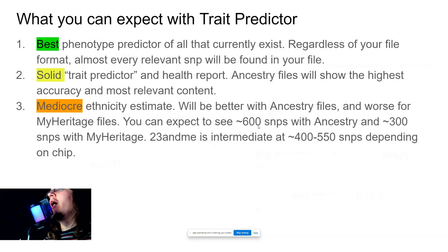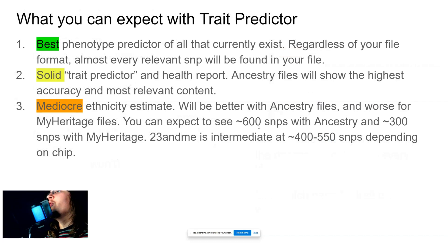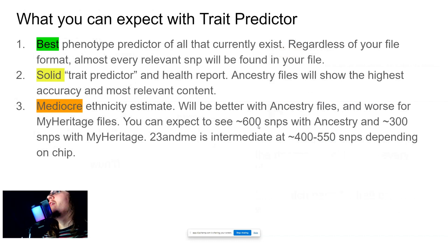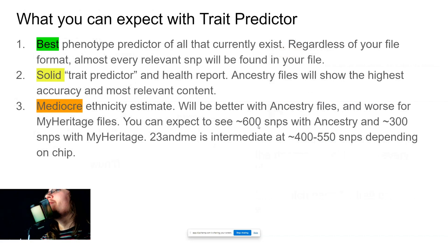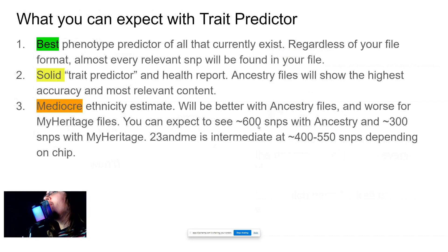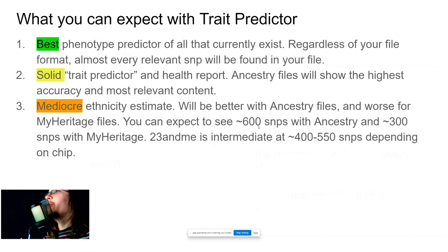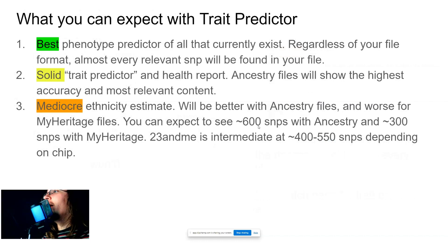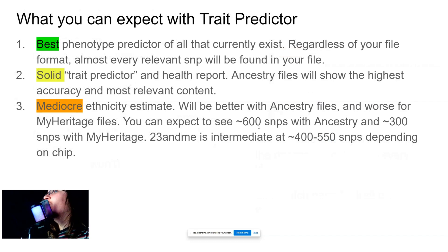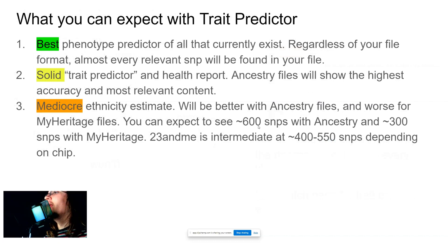Ancestry files will show the highest accuracy and most relevant content. So if you have an AncestryDNA file, you will probably have a little bit more content in your results than if you have 23andMe or MyHeritage. Third is that it offers a mediocre ethnicity estimate. The ethnicity estimate is really not so good, but it sort of does its job — it's not inaccurate, it's just kind of mediocre. It will be better with Ancestry files, because Ancestry files tend to get much more SNPs, and it will be worse for MyHeritage files.